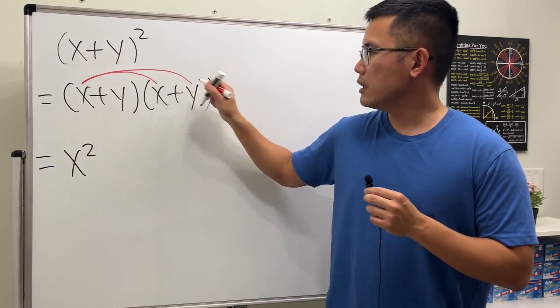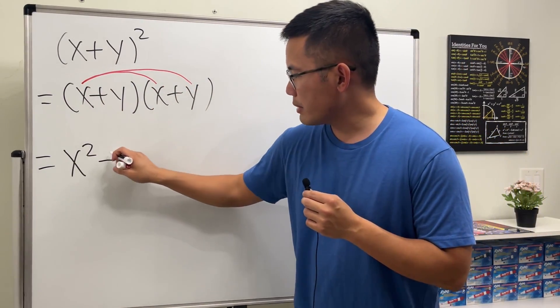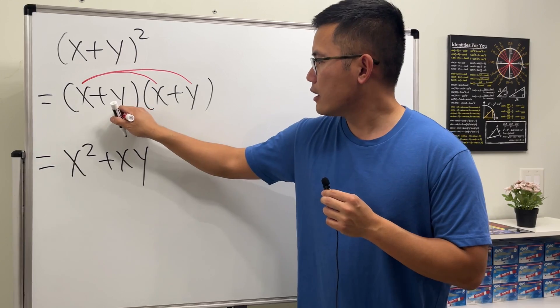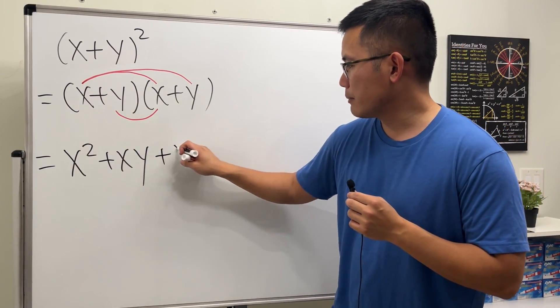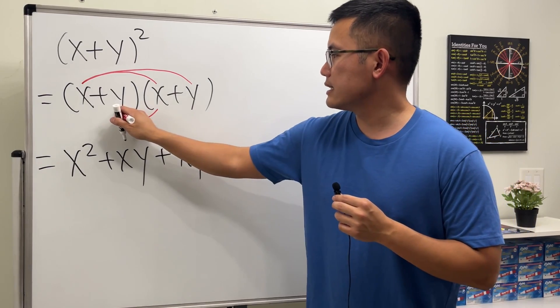And then the outer: x times y, we're just going to write down plus xy. And then the inner: y times x is the same as x times y, so we'll just put on plus xy again.